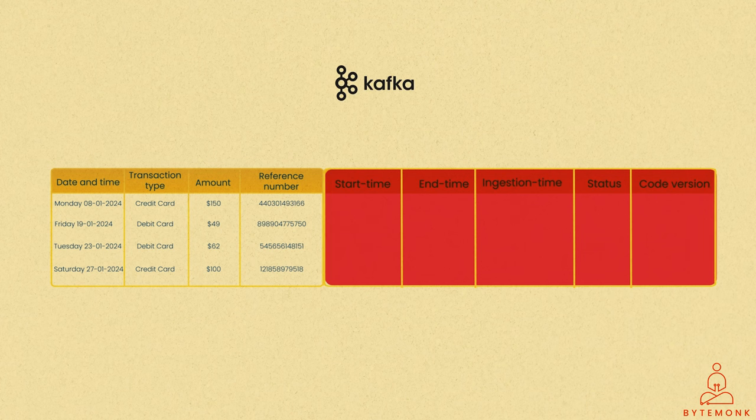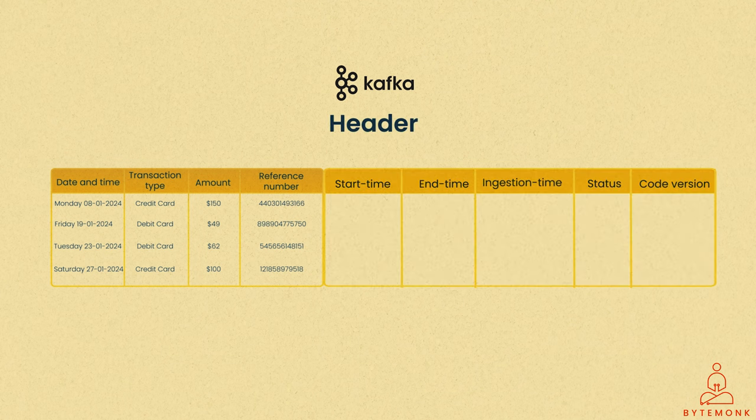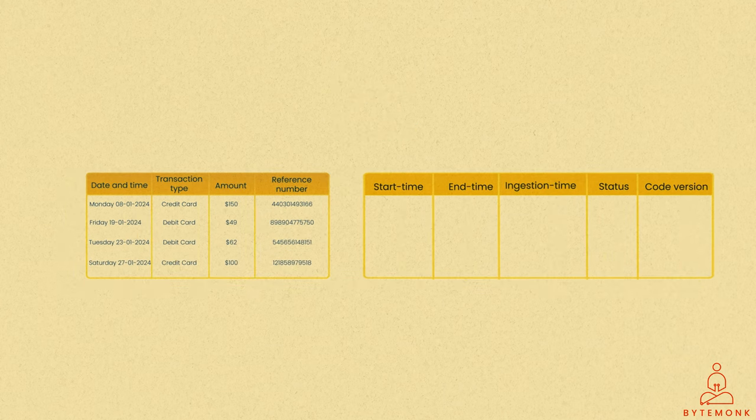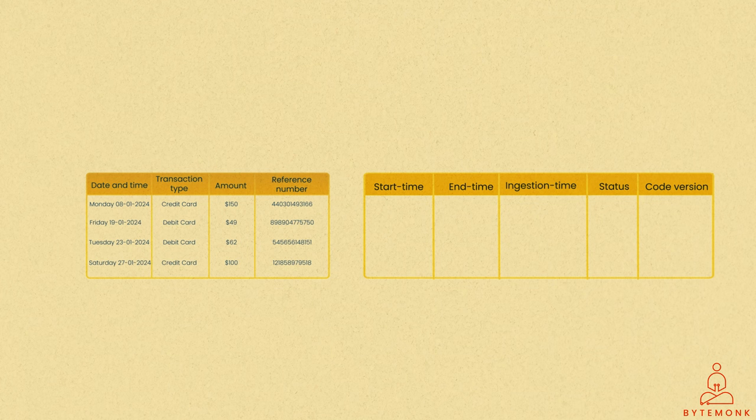For example, in Apache Kafka, although primarily a real-time processing engine, it operates with batches, with each message containing metadata in its header. Alternatively, metadata can be stored separately and linked to the batch, enhancing the efficiency of metadata querying. Alright, onto the final point.